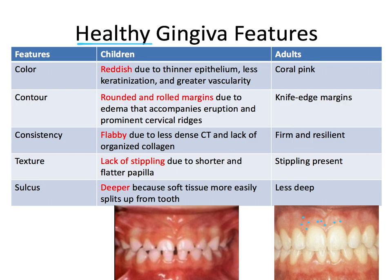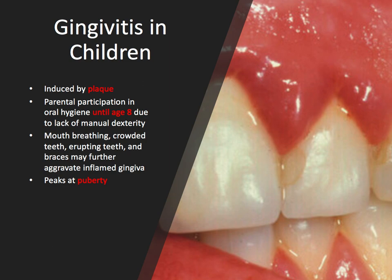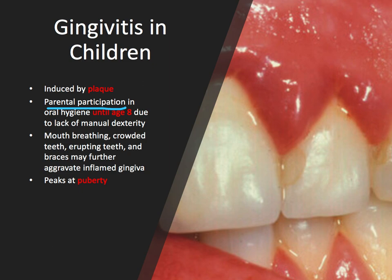So now let's talk about what can go wrong. Gingivitis is very common among children and adolescents specifically, and affects up to 70% of children over the age of 7. You can't have gingivitis without some amount of plaque, and you can't have periodontitis without first having gingivitis. So it really all starts with plaque, which is related to poor oral hygiene. That's why parental participation in oral hygiene until the age of 8 is really important and recommended due to a lack of manual dexterity. Mouth breathing, crowded teeth, erupting teeth, and braces may further aggravate inflamed gingiva — largely due to difficulty keeping the teeth clean, less saliva, or more plaque retention.